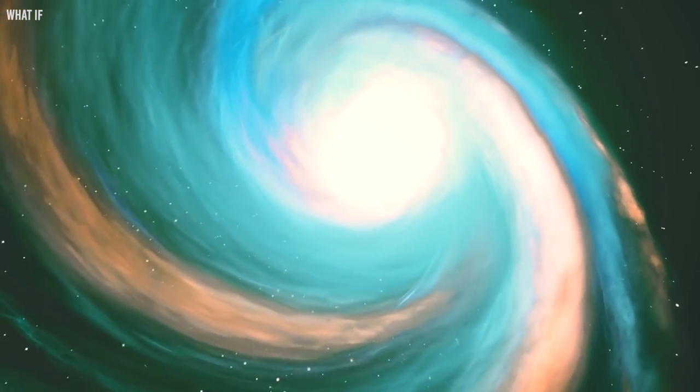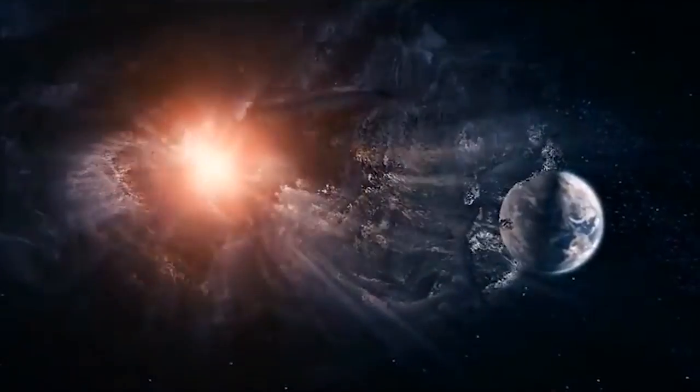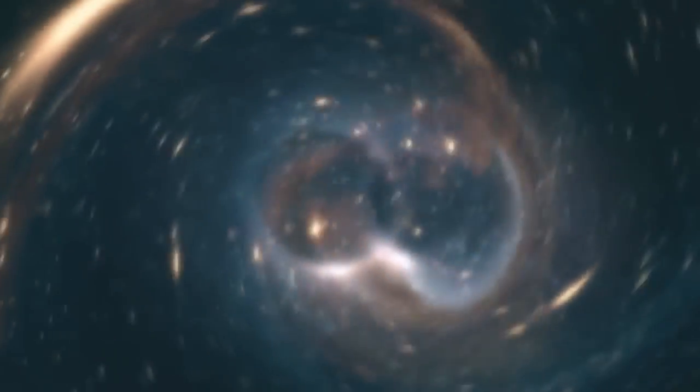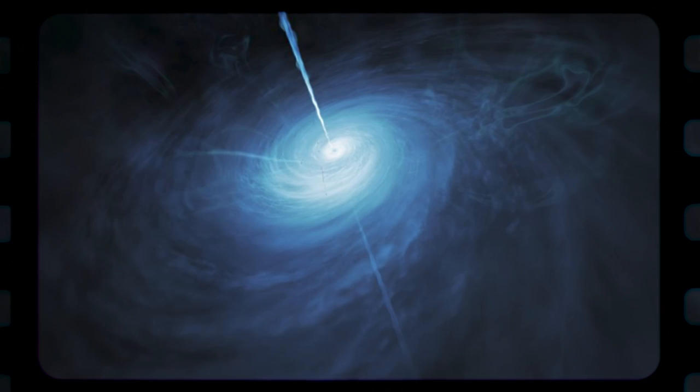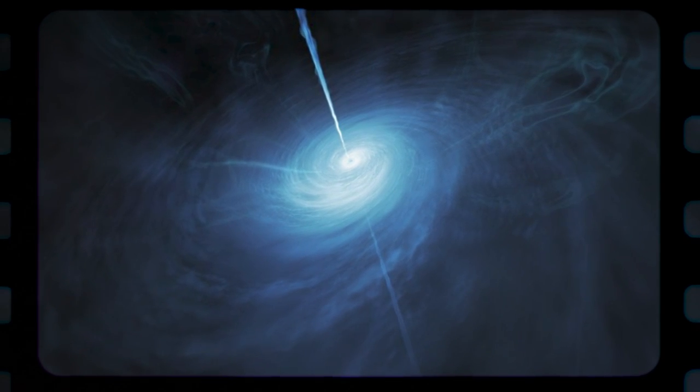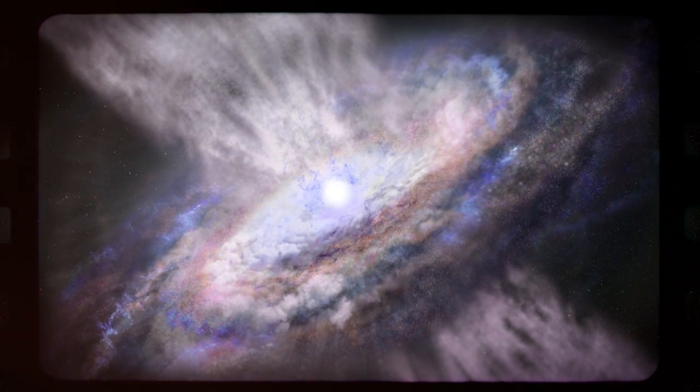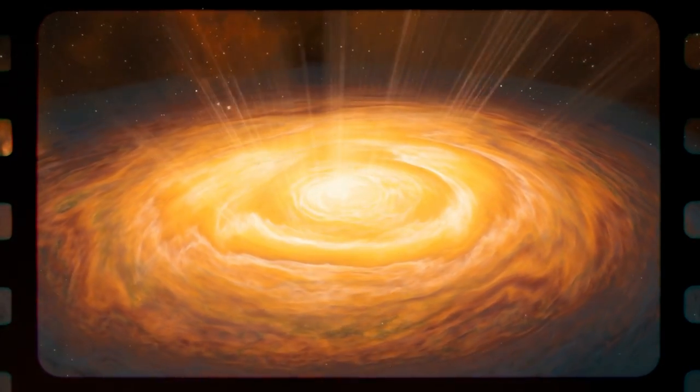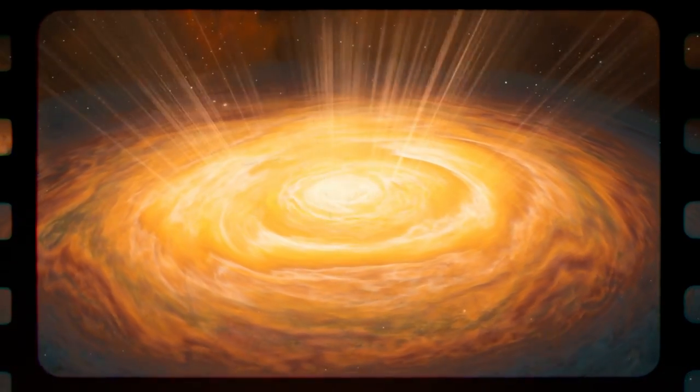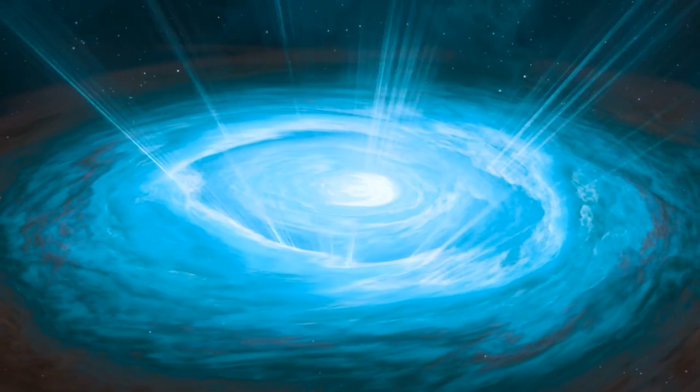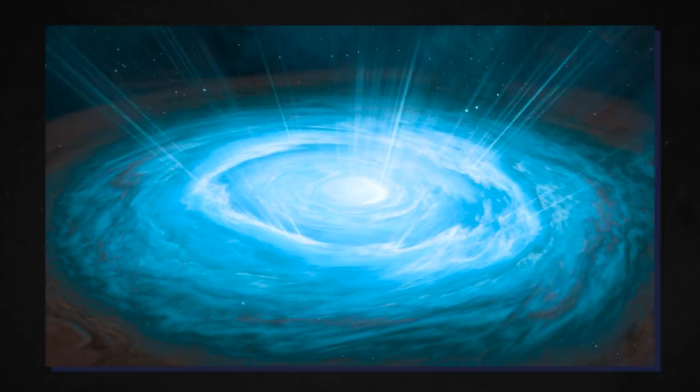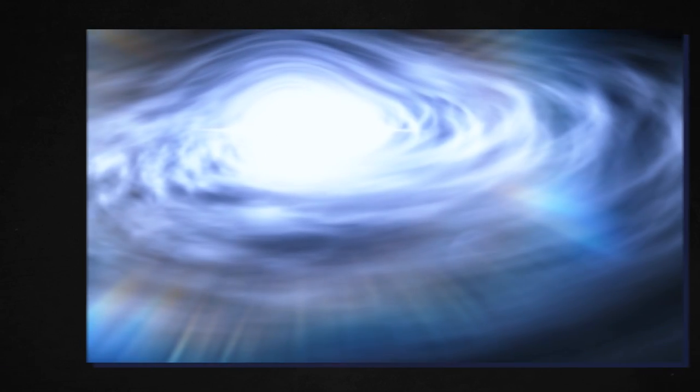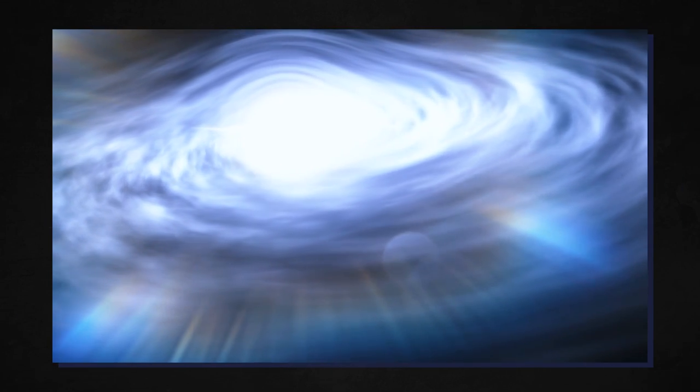Quasars are actually supermassive black holes that are consistently feeding. These cosmic vacuum cleaners become tremendous by merging with other black holes and constantly feeding on surrounding material. However, the feeding rate of black holes sets the limit on their size. These celestial giants can only consume so much material in a given amount of time. As material falls in, it heats up and releases radiation, creating a quasar. But that radiation heats the material itself, preventing it from quickly falling into the black hole. This self-regulation prevents black holes from growing too quickly.